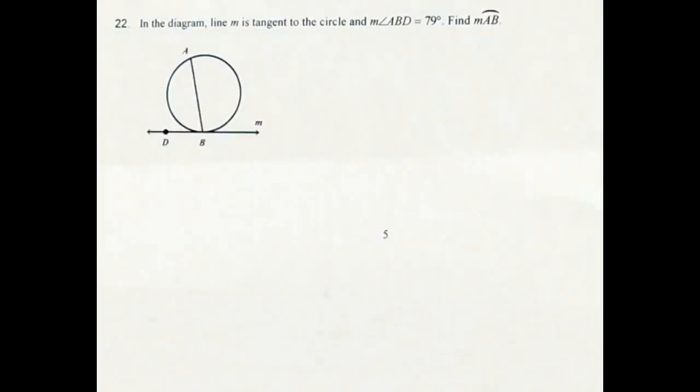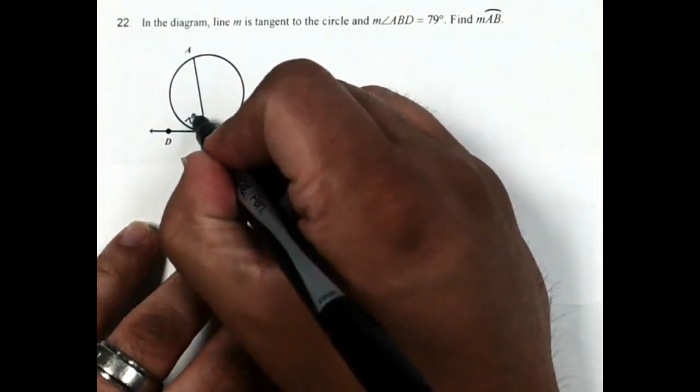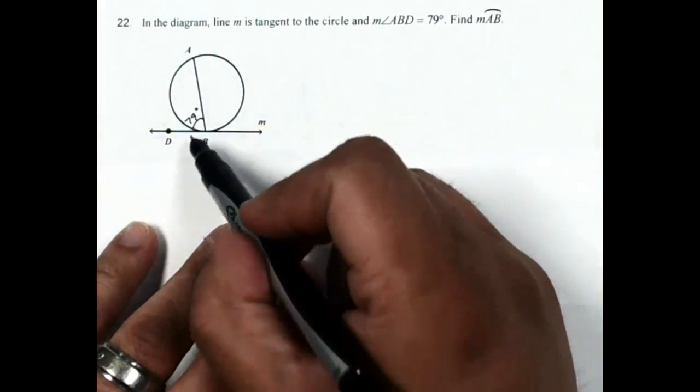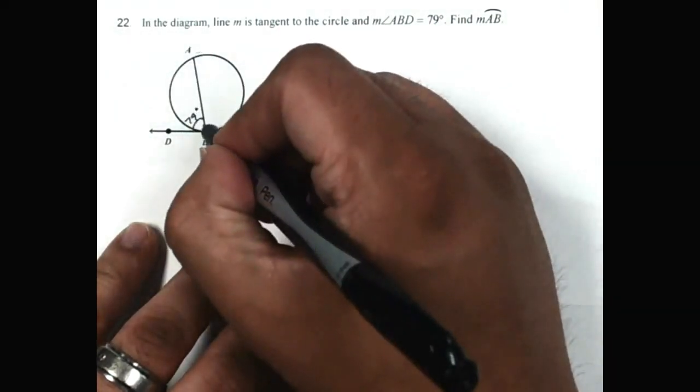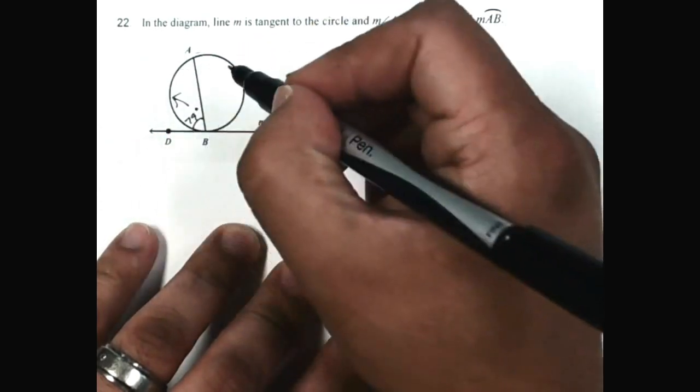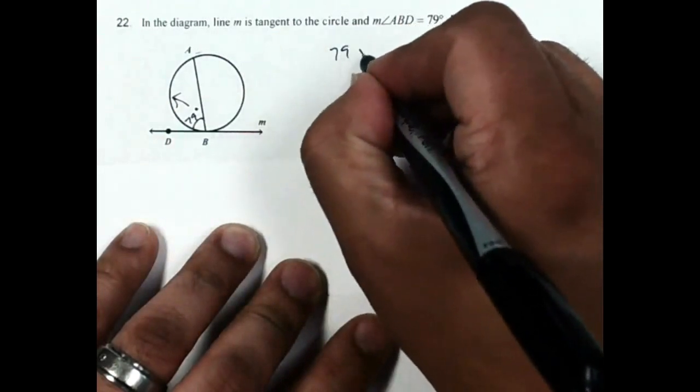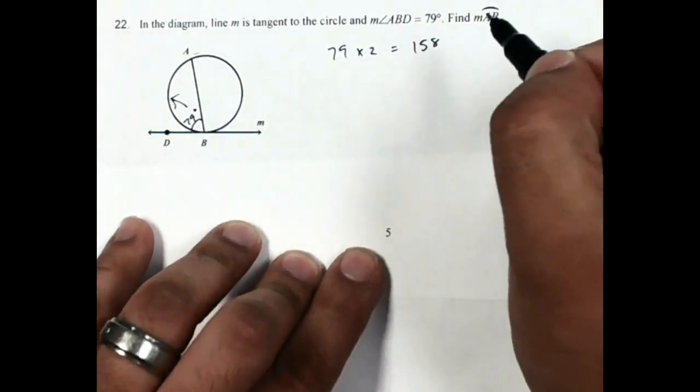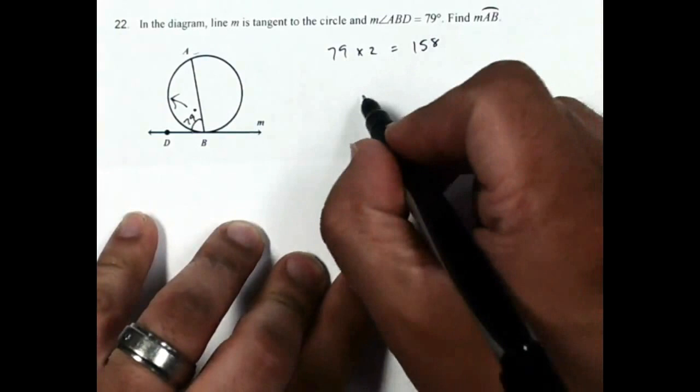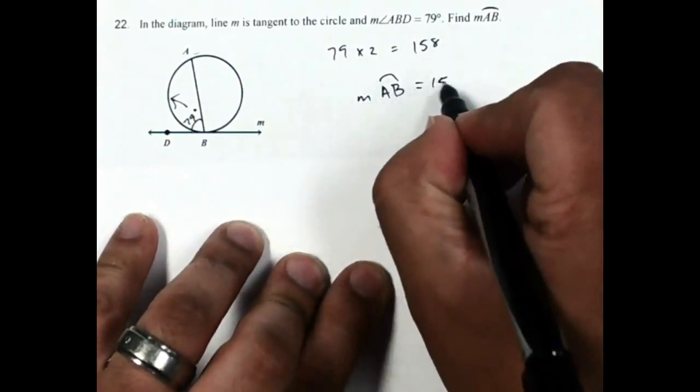All right, on number 22, the measure of angle ABD is 79, so this angle has 79 degrees. We want the measure of arc AB, so that's going this way. So again, since I'm going from the angle towards the arc, I want to multiply by 2. So 79 times 2 is going to be 158. So the measure of arc AB is 158 degrees.